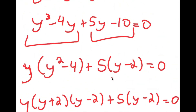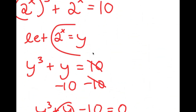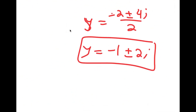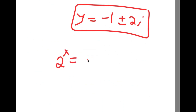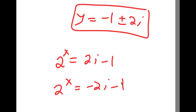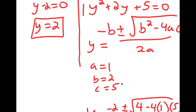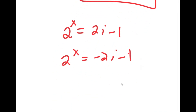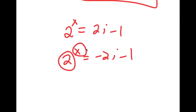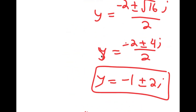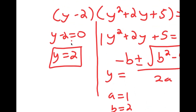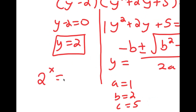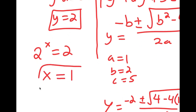Now, remember we let 2 to the power of x equal y. We get 2^x equals 2i minus 1 and 2^x equals negative 2i minus 1. We can't have a positive number raised to a power equal a complex number, so there is no solution for these. That means we can only use y equals 2, giving 2 to the power of x equals 2, so our only solution is x equals 1.